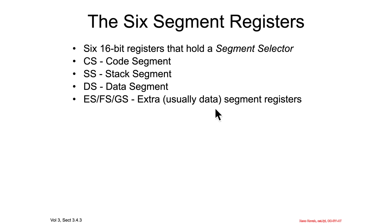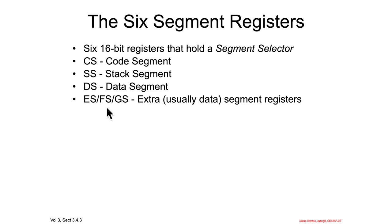There are six segment registers on Intel processors, and each holds a 16-bit segment selector. The naming convention: CS is the code segment, SS is the stack segment, DS is the data segment, ES is the extra segment, and there are additional segments (sometimes called EFG) that were just extra data segments people could potentially use but never actually did.